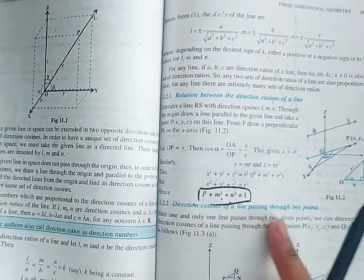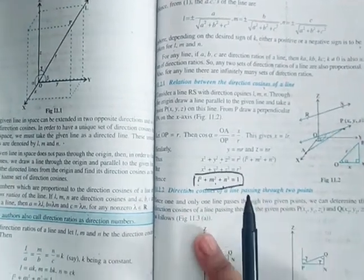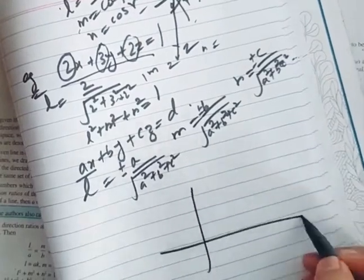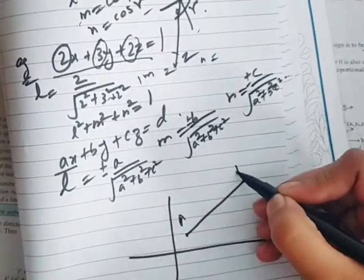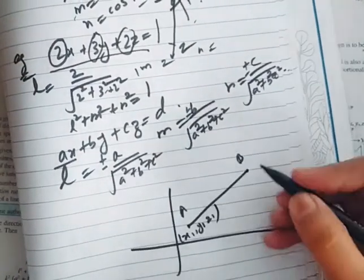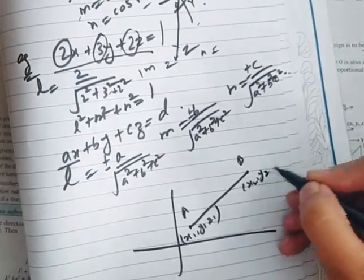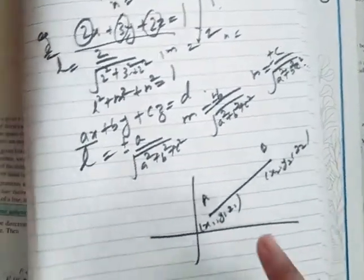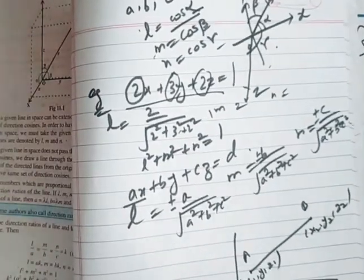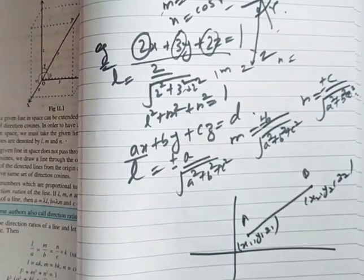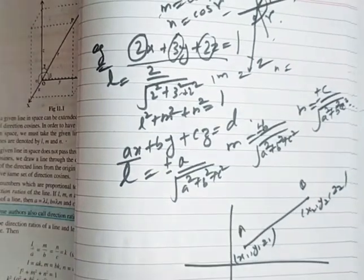So direction cosines of a line passing through two points — this is the main topic. If a line is passing through two points, and you have to find its DCs, we can visualize it as: a line AB where A has coordinates (x₁, y₁, z₁) and B has coordinates (x₂, y₂, z₂). To find direction cosines, you first need to generate the line's direction vector.